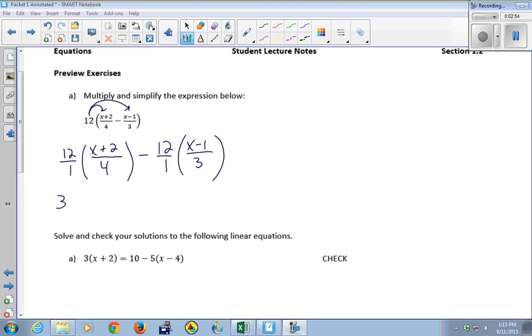So we have 12 times (x+2)/4 minus 12 times (x-1)/3. And think of these as 12/1. And then we have a 12 on top and a 4 on the bottom. So you can reduce those. What does 12/4 reduce to? 3/1. So this becomes 3 times (x+2). The 12, 4 goes into 4 once, and it goes into 12 three times.